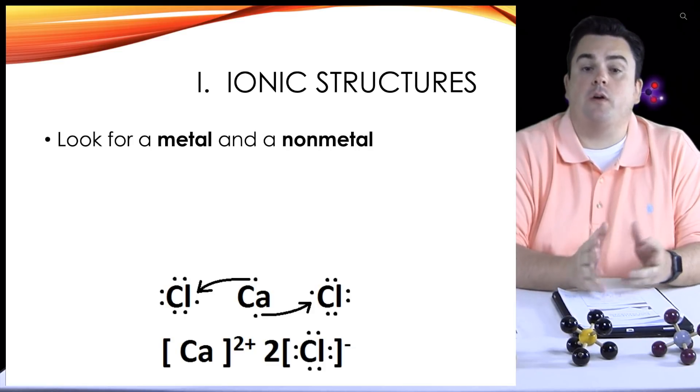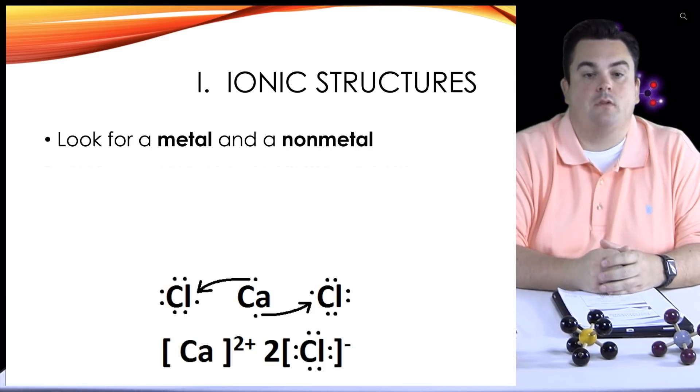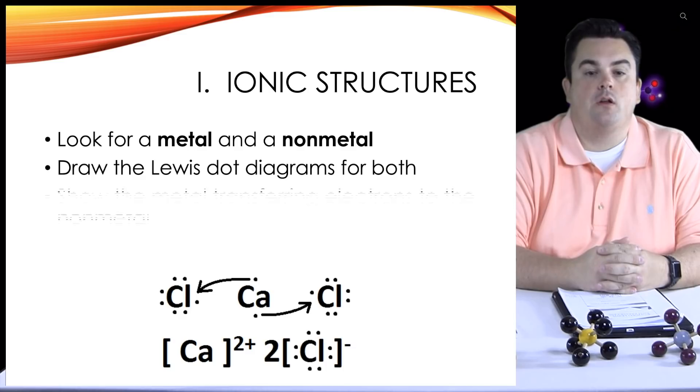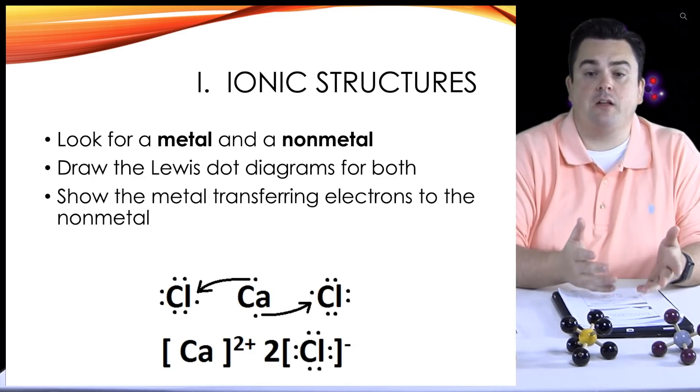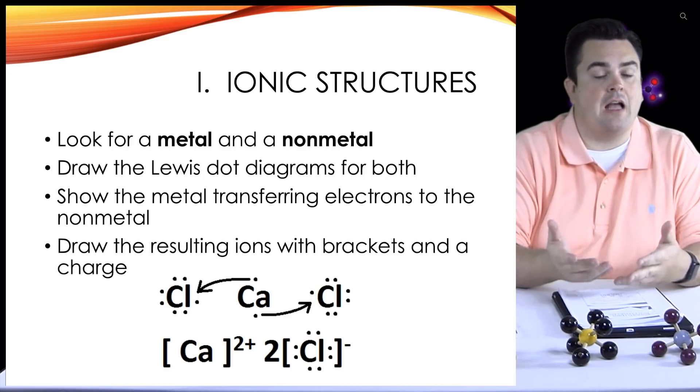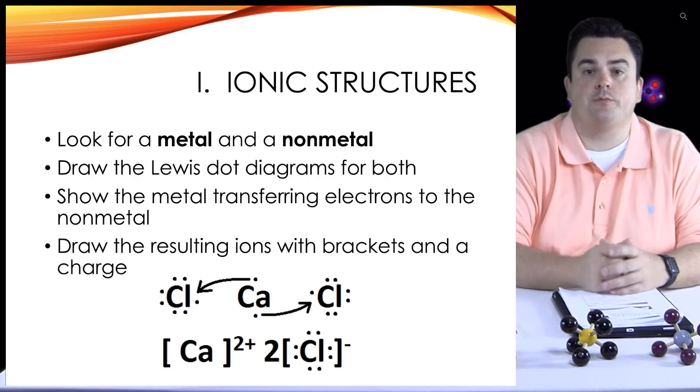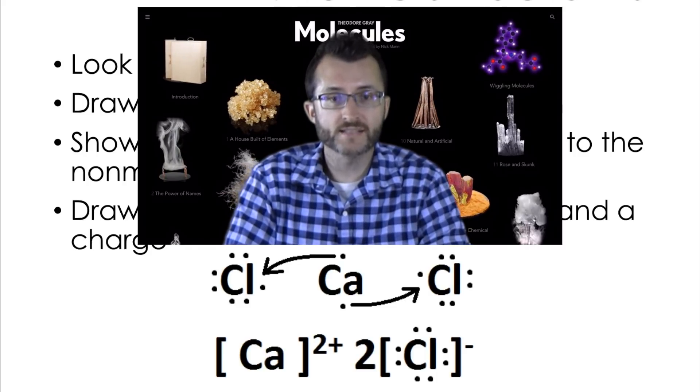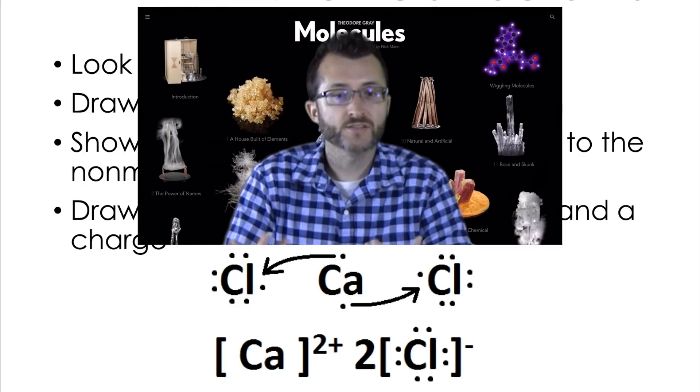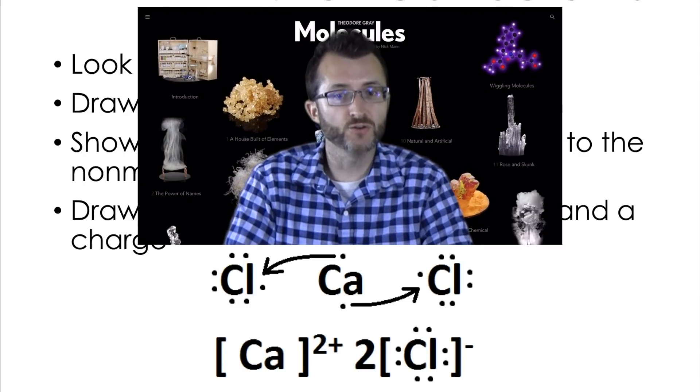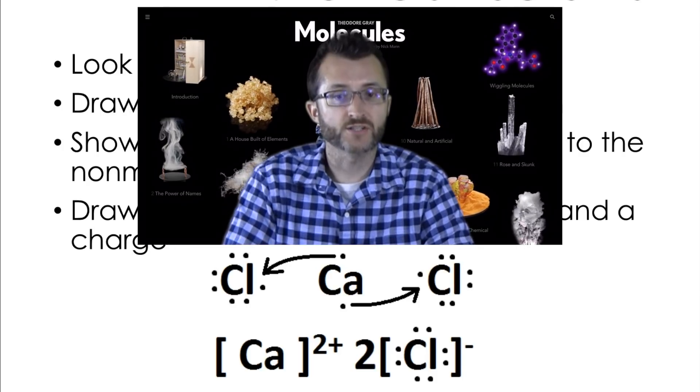Ionic structures: Look for a metal and a non-metal. Draw the Lewis dot diagrams for both. Show the metal transferring electrons to the non-metal. Draw the resulting ions with brackets and a charge. Notice in the picture below that we have calcium losing two electrons and each chlorine gaining one. So calcium has a plus two charge shown in the brackets, and each chlorine has a minus one charge shown in the brackets.